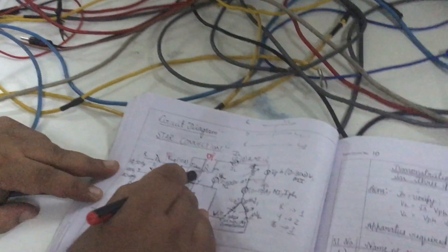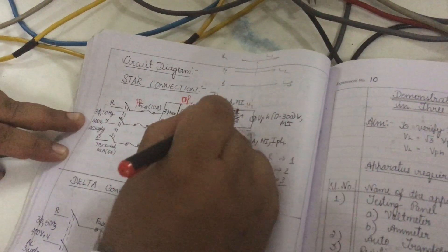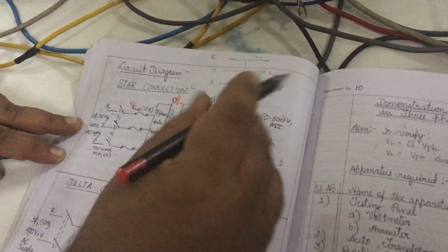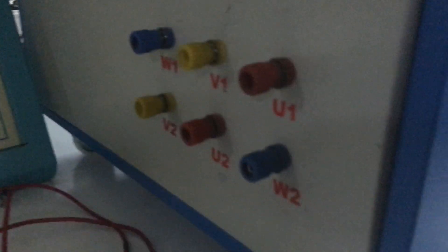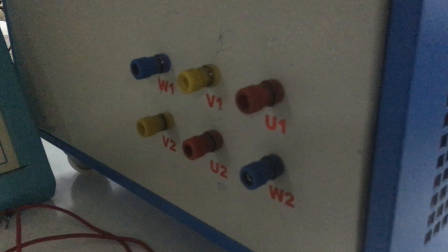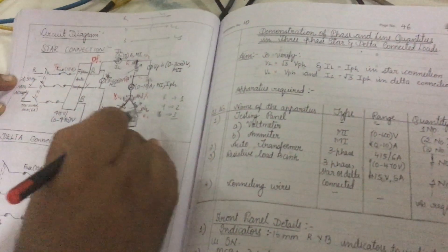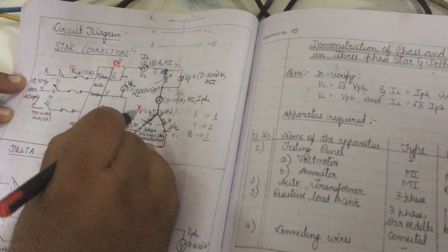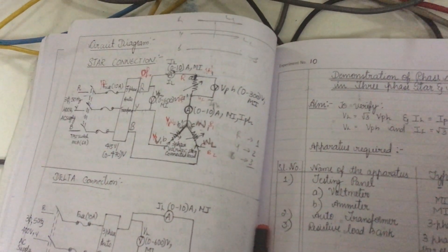Looking at the circuit, the line ammeter is connected here. If you're confused by U1 and U2, note the color coding: U1 and U2 are in red (R), V1 and V2 are in yellow (Y), and W1 and W2 are in blue (B). You can label them accordingly — red, yellow, or blue.